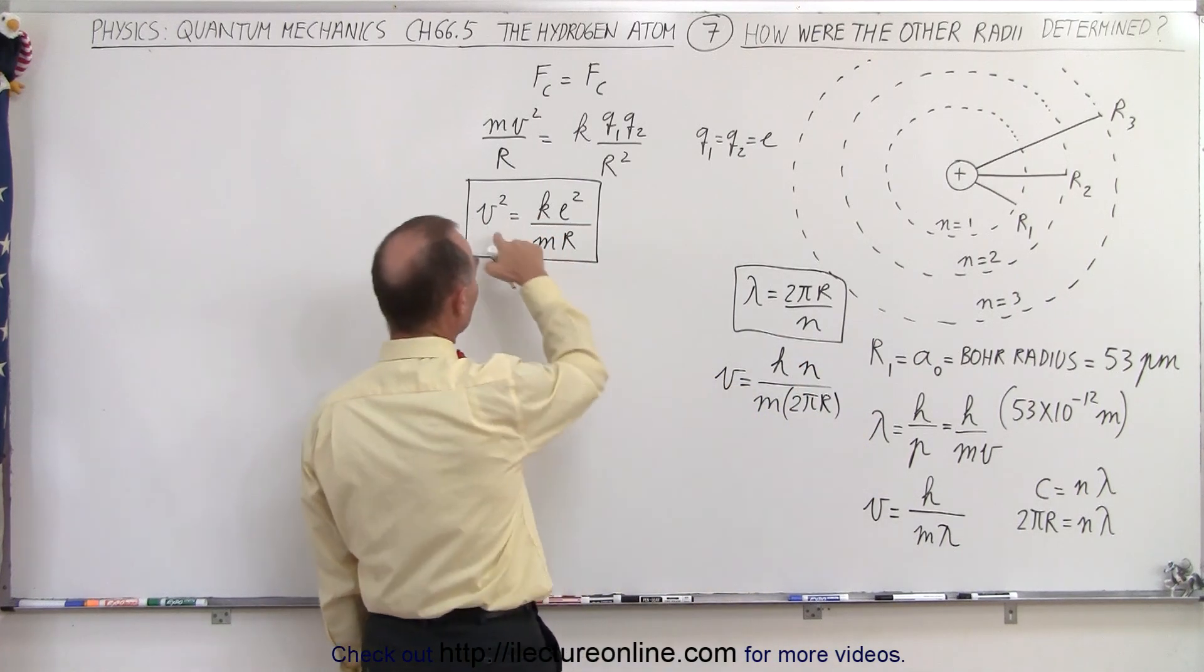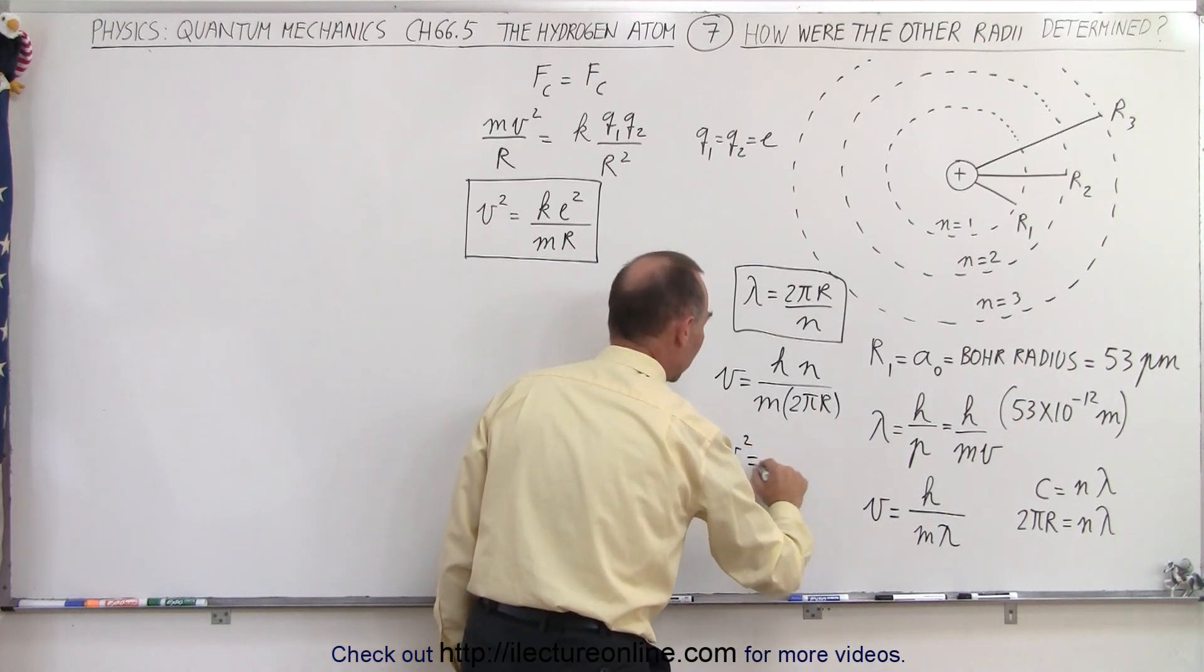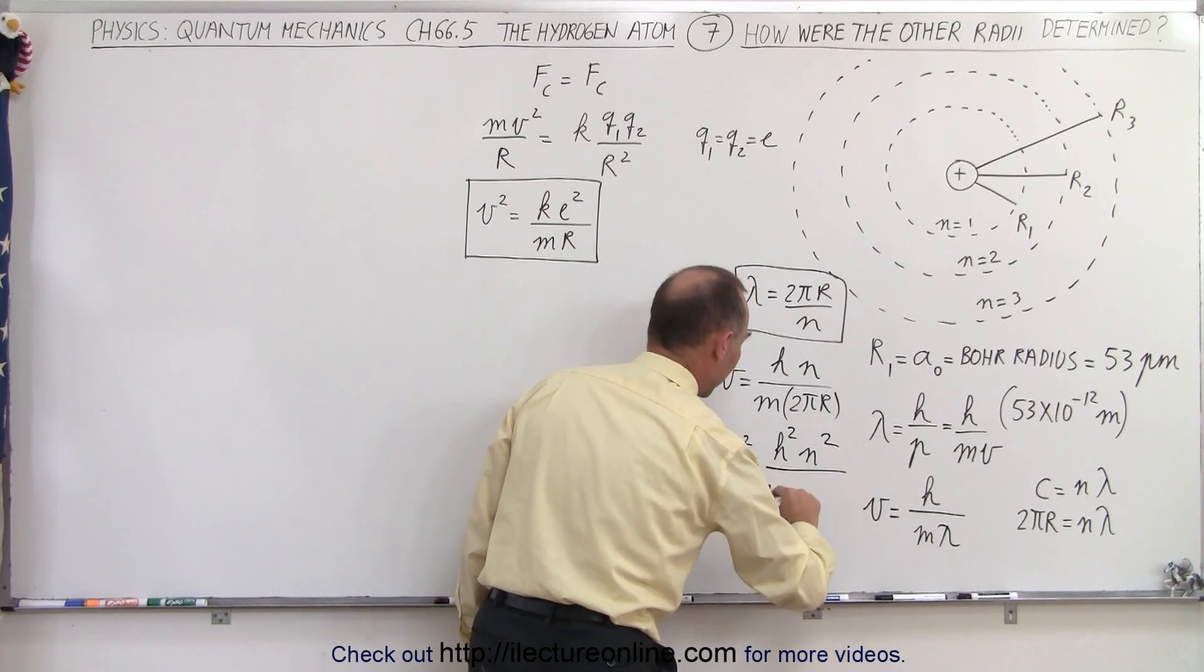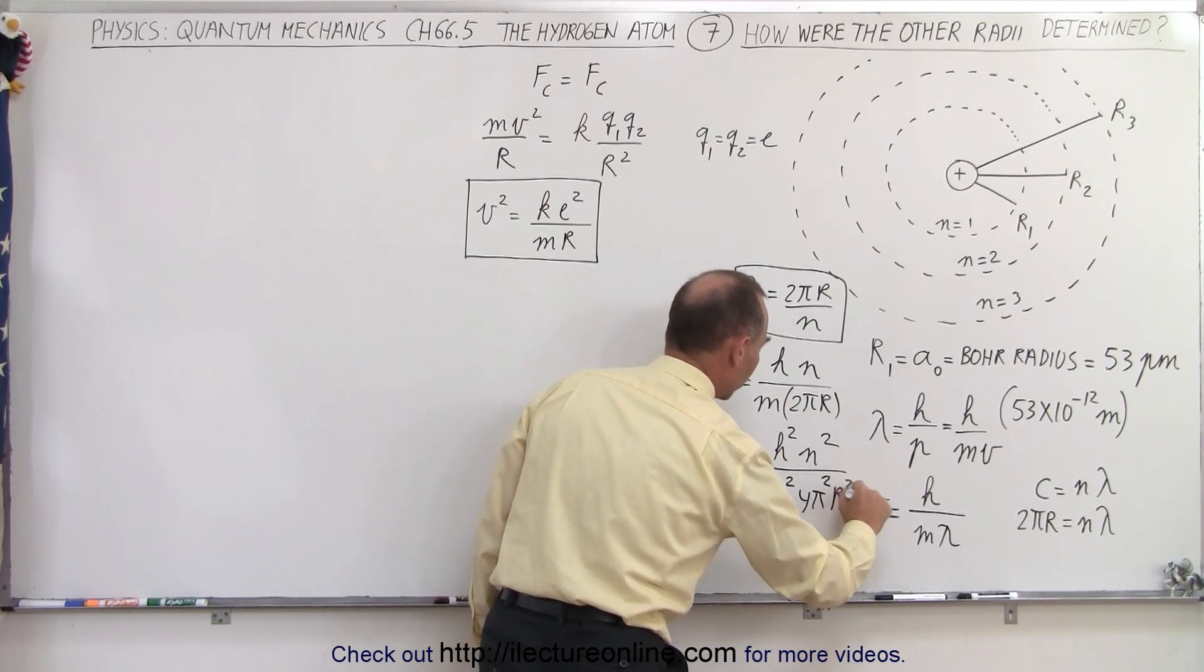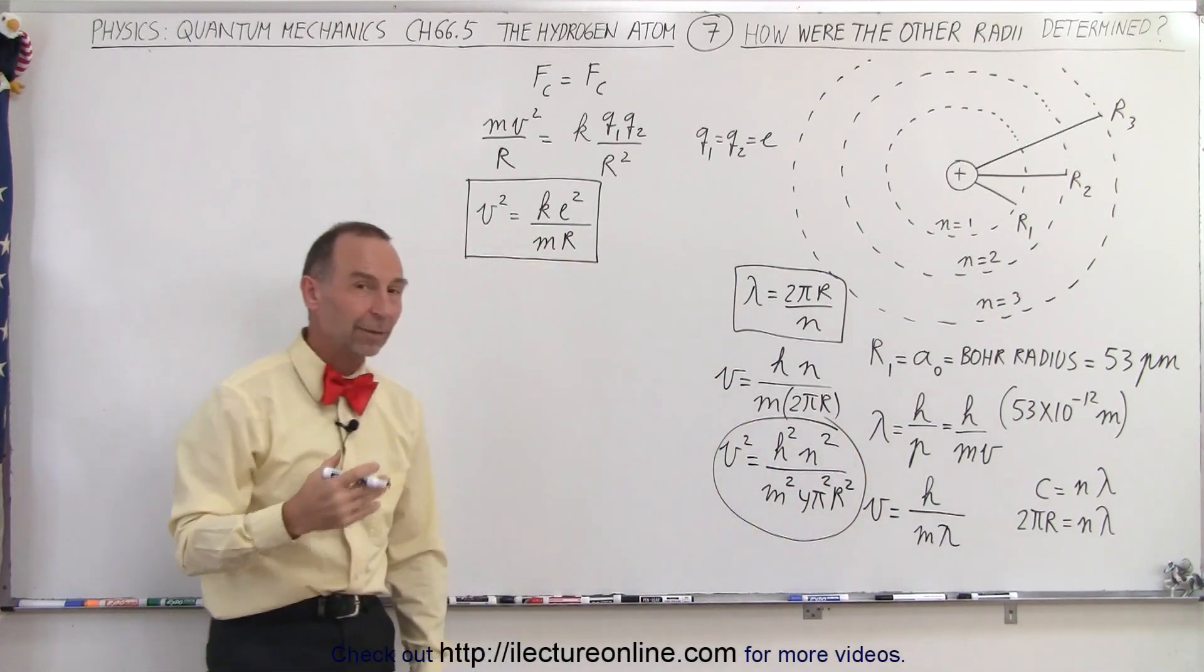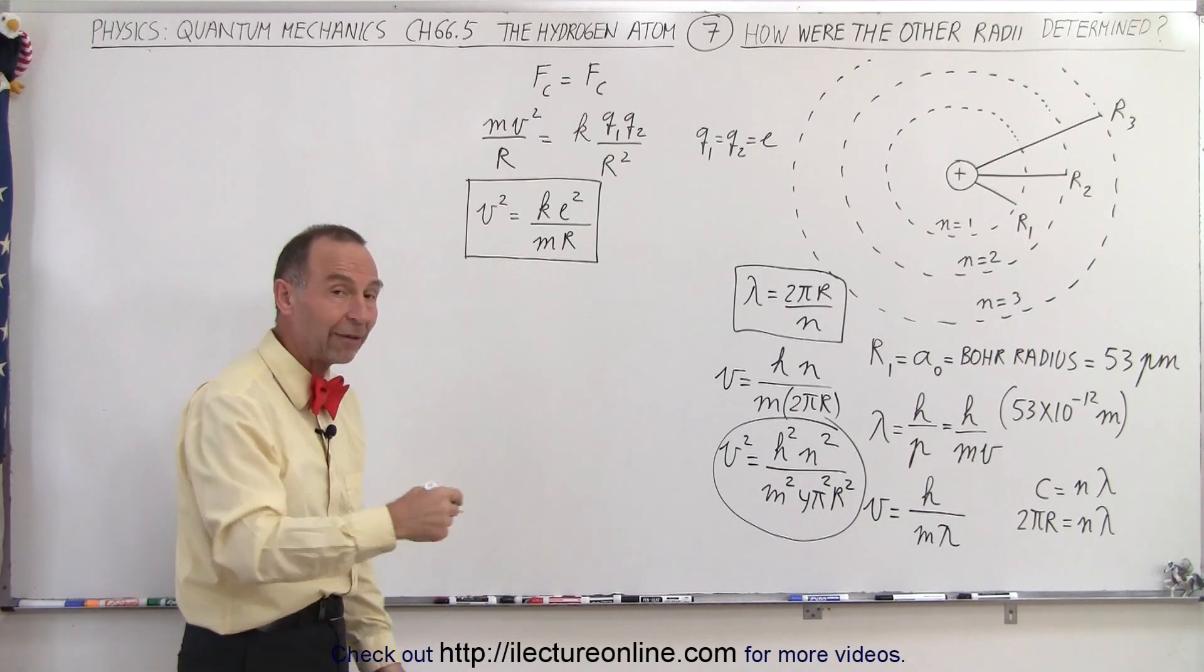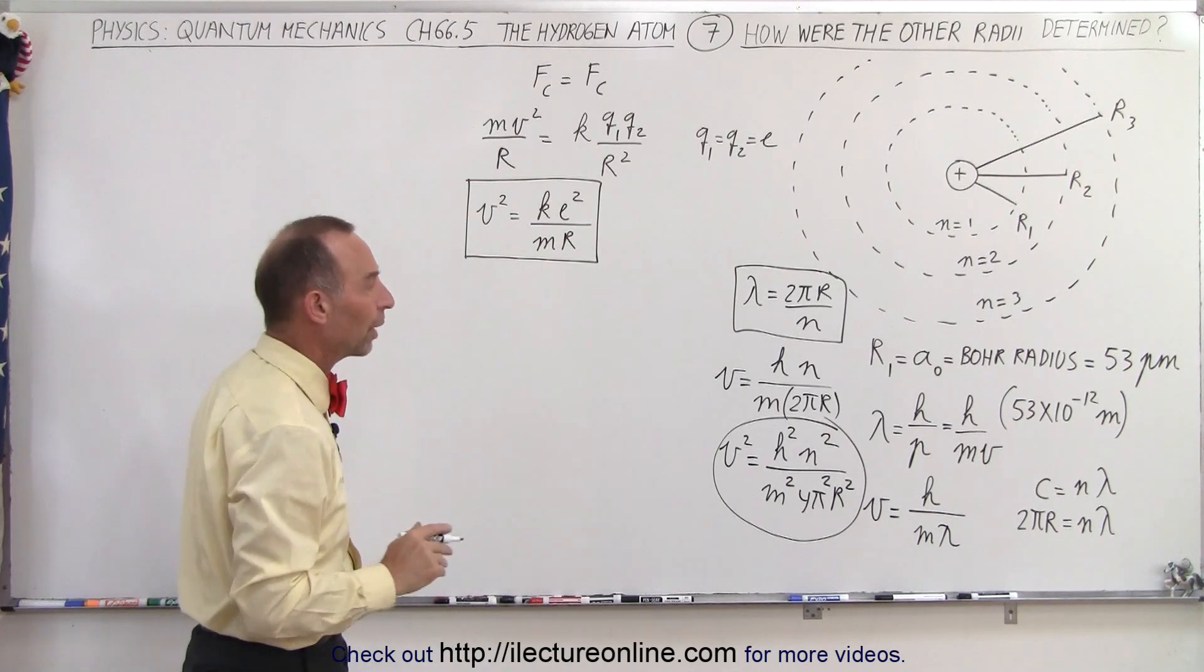And then if we square that, so we can set them equal to this equation right here, we can say that V squared is equal to H squared n squared divided by m squared 4π squared r squared, and this equation can then be equated to this equation, again to eliminate V, and so we only have r left, the radius, but now we'll have the radius for the various radii of all the orbits around the nucleus.